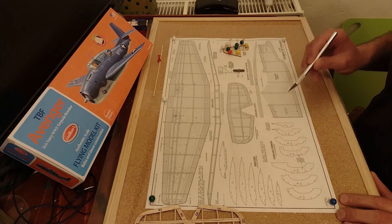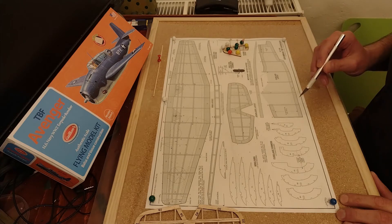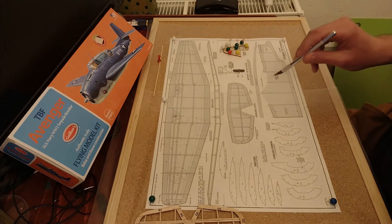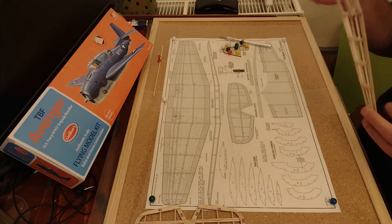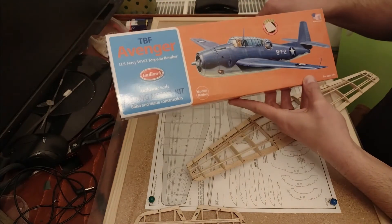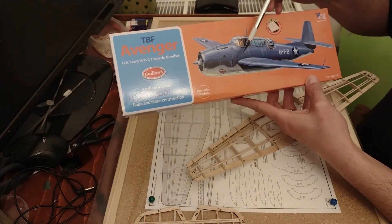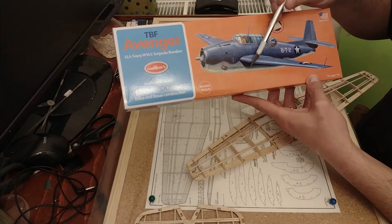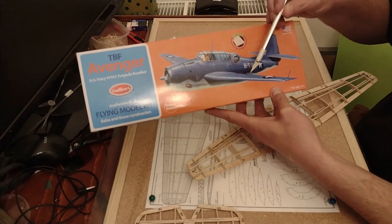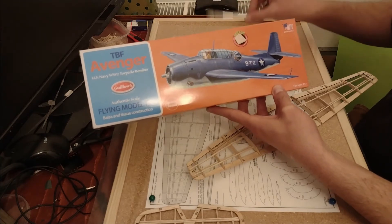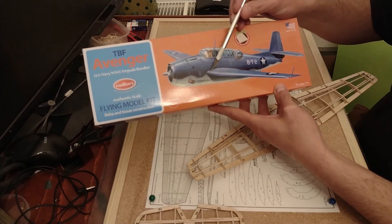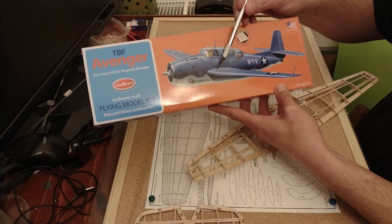I still have to figure out where I'm going to put the ESC, battery, and servos. One challenge different from the Spitfire is that this wing is mid-mounted, not low-mounted. So I have to figure out where to put the servo to control the ailerons, which I'll mount on the wing.